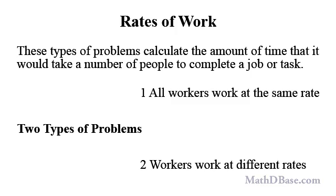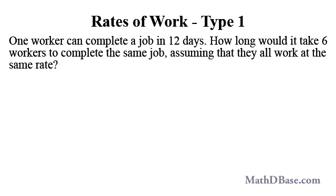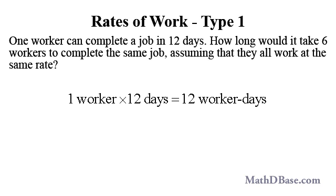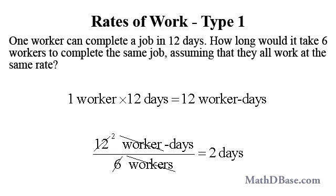Let's look at some examples of the first type. One worker can complete a job in 12 days. How long would it take 6 workers to complete the same job, assuming they all work at the same rate? If one worker works for 12 days, that is called 12 worker days. Dividing the 12 worker days by 6 workers gives 2 days — the time 6 workers will take to complete the task.